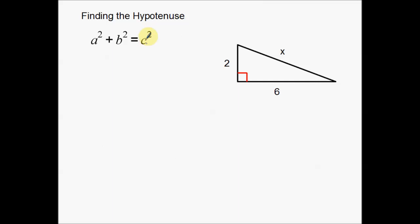With the Pythagorean Theorem, what I need to do first is identify the legs and then identify the hypotenuse. As I look at my right triangle, the legs are always going to be right next to the right angle symbol. Make sure that with the Pythagorean Theorem you are only using it on right triangles — at least for right now. The legs of my right triangle are always going to be right next to the right angle symbol.